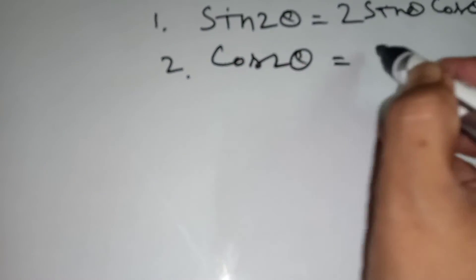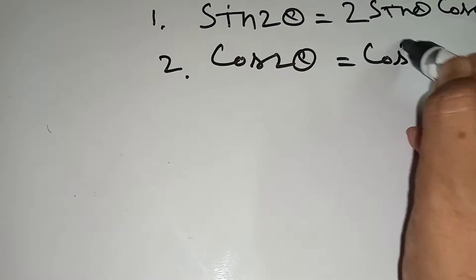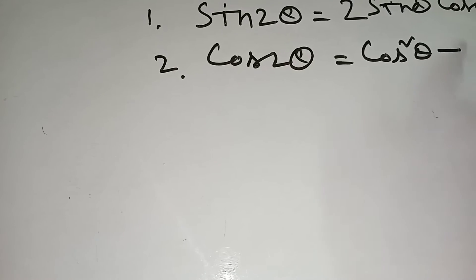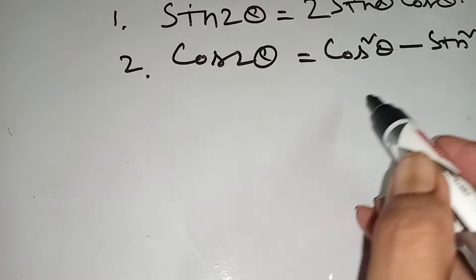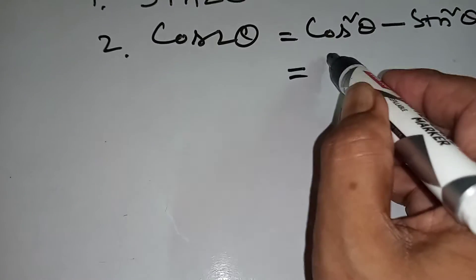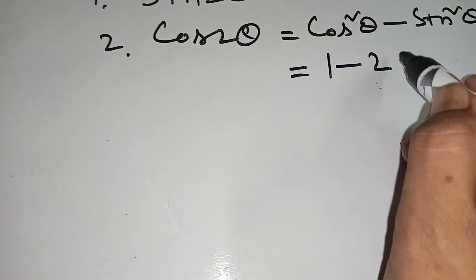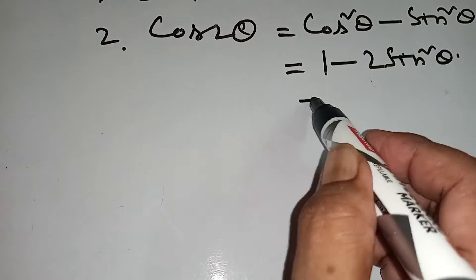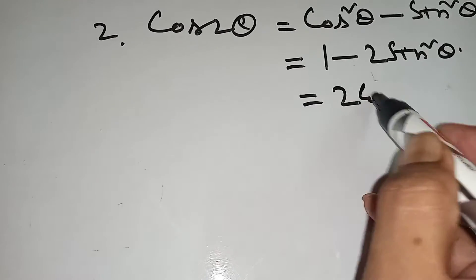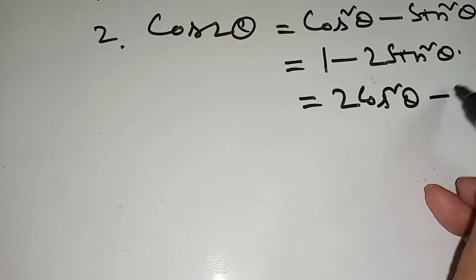Number 2: cos 2 theta equal to cos square theta minus sin square theta. This one you can write 1 minus 2 sin square theta or 2 cos square theta minus 1.